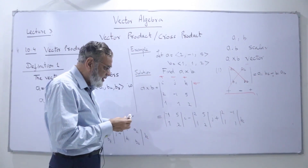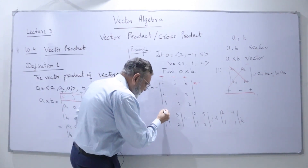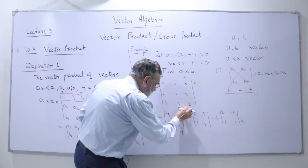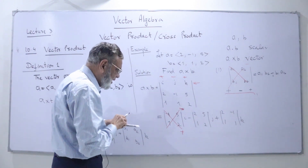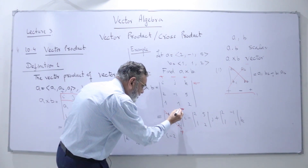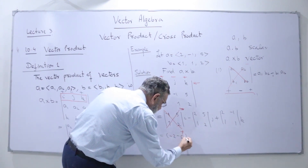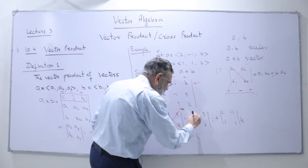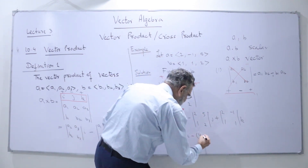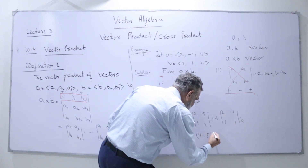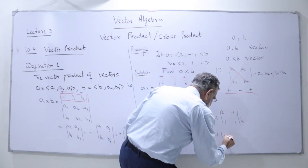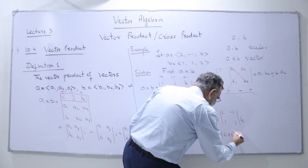Now I open this one. As we discussed before, when we multiply this 2×2 determinant, we apply the plus and minus sign pattern. We get: (-1×2 - 5×1)i, which gives (-2 - 5)i = -7i. Then minus (2×2 - 5×1)j, which gives minus(4 - 5)j. Then plus (2×1 - (-1)×1)k.